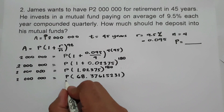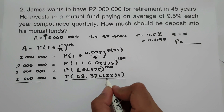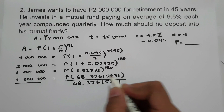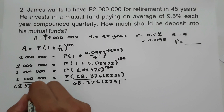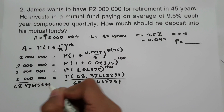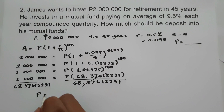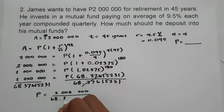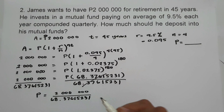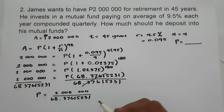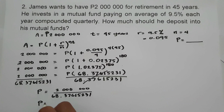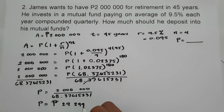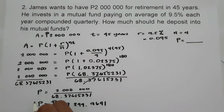We divide the whole equation by 68.37615231. So principal equals 2,000,000 divided by 68.37615231. Dividing gives us a principal of 29,249.9641 pesos. This will be our answer.